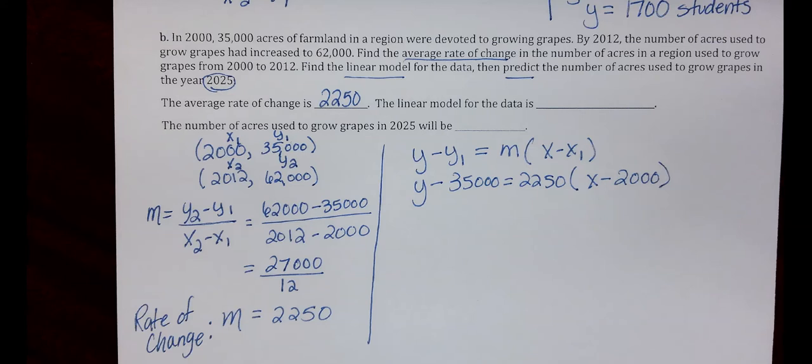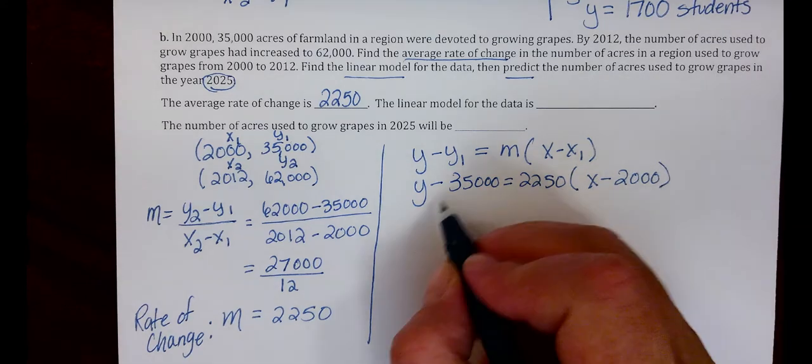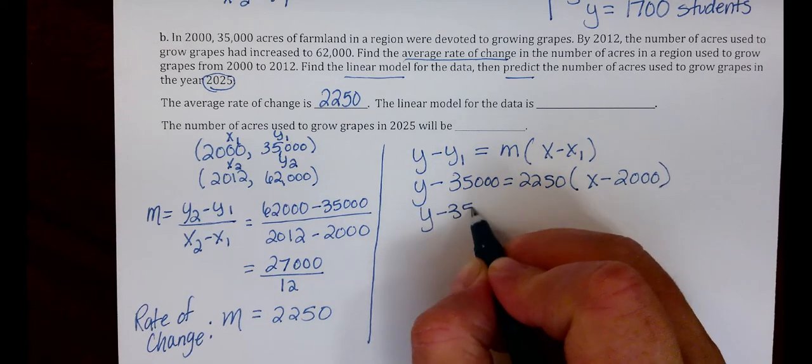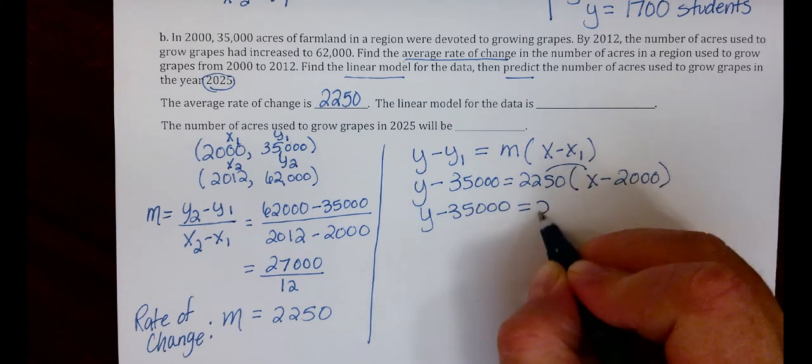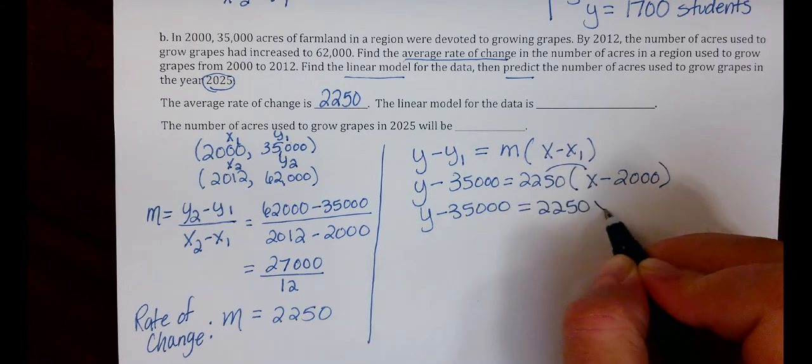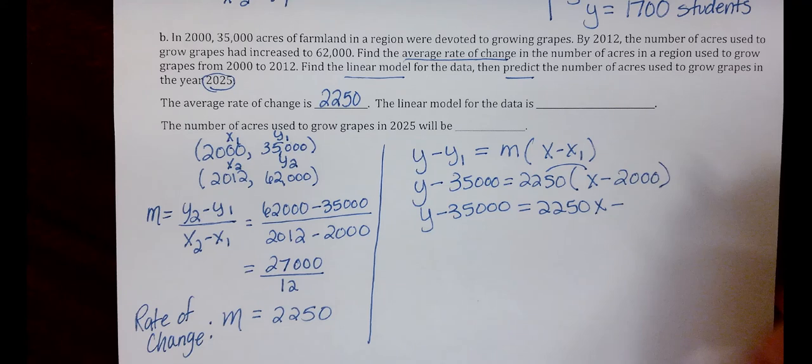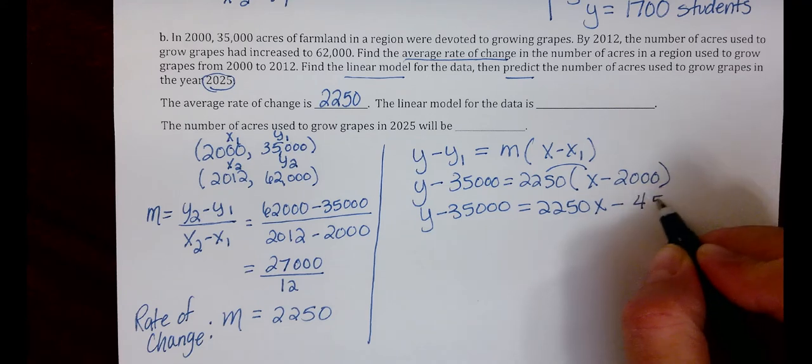Next, use distributive property to simplify. Y minus 35,000 equals 2,250X minus 4,500,000.